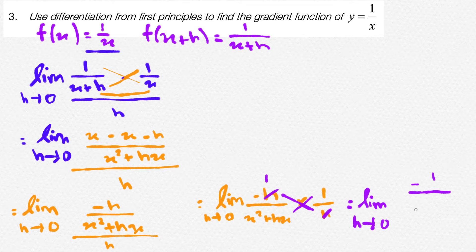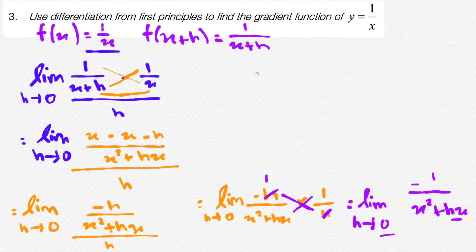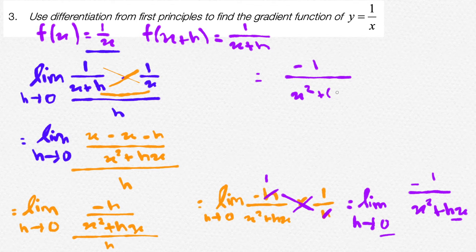Now, since there is only one term with the letter h, we can simply sub in h is equal to 0 into our new equation. So subbing in 0, you will get minus 1 over x squared plus 0 times x. 0 times x is simply 0. So we can write our final answer as minus 1 over x squared.